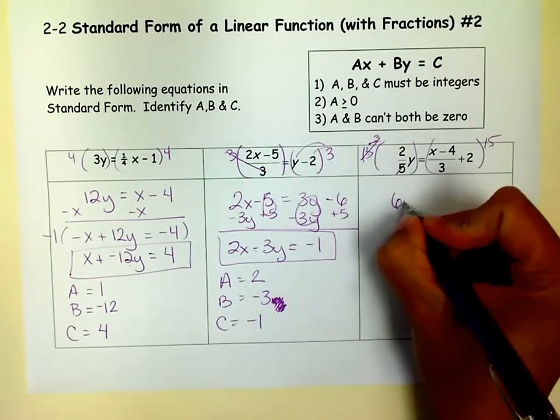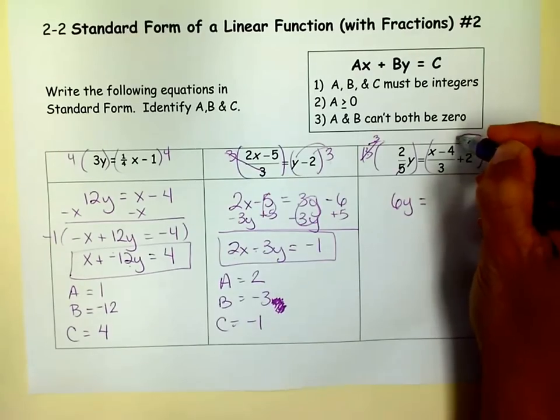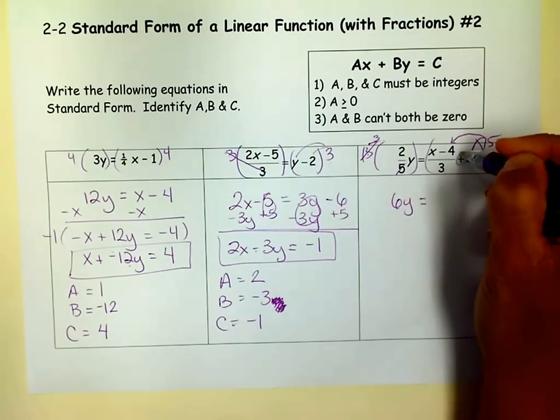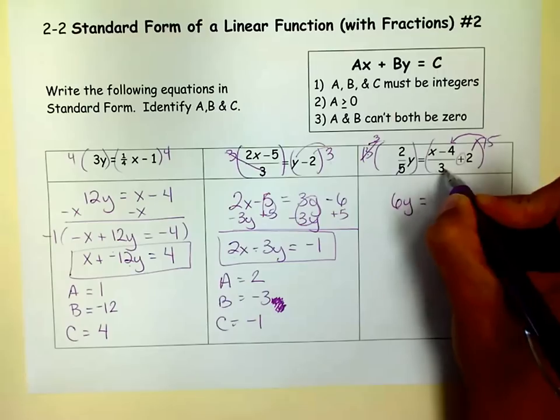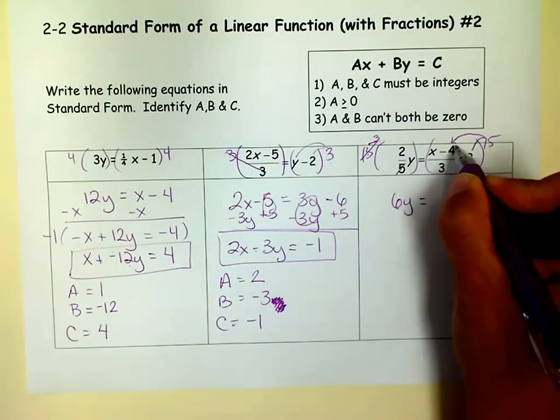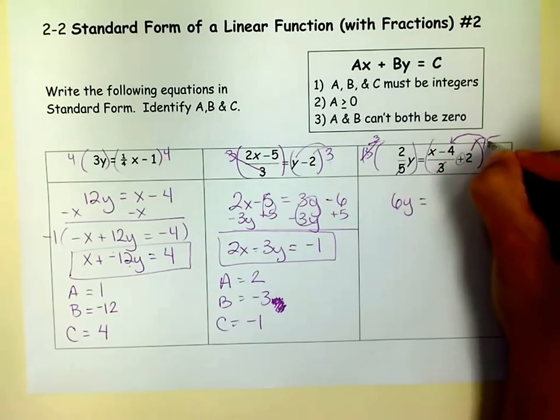Now I have to distribute that 15 into both things that are separated by a plus or minus sign. You see a minus sign there. But this is a fraction. So we consider that one thing. So I only have to multiply the 15 by that whole fraction.